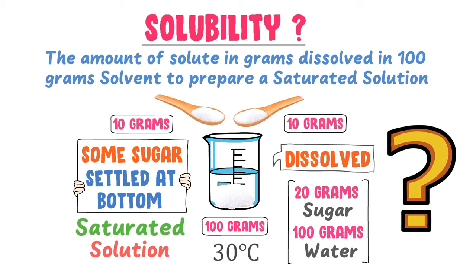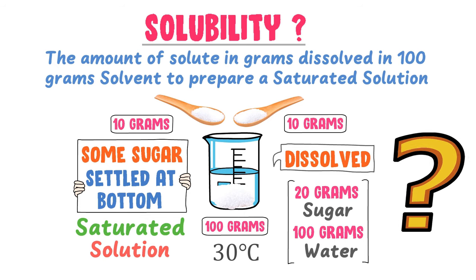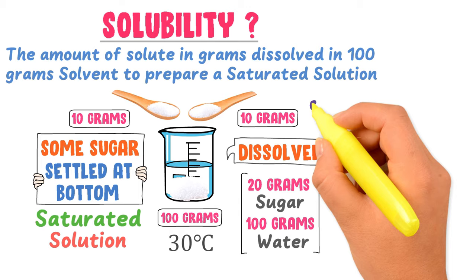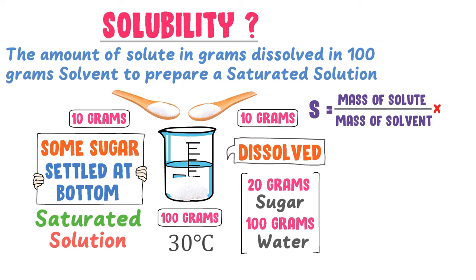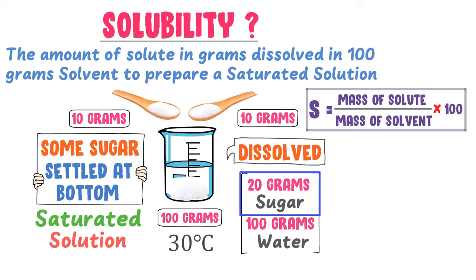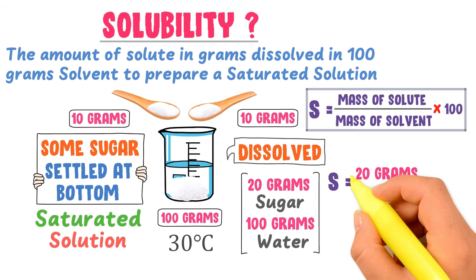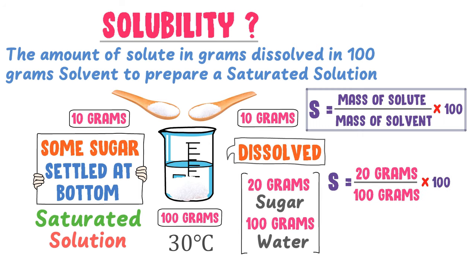Now, how can we calculate the solubility of a solution? The formula is: solubility equals mass of the solute divided by mass of the solvent, multiplied by 100. Here, the mass of the solute (sugar) is 20 grams dissolved in 100 grams of solvent (water). So solubility equals 20 grams per 100 grams times 100, giving us a solubility of 20 percent.